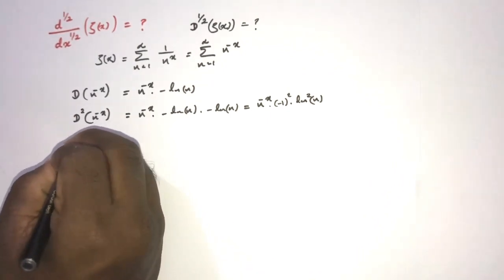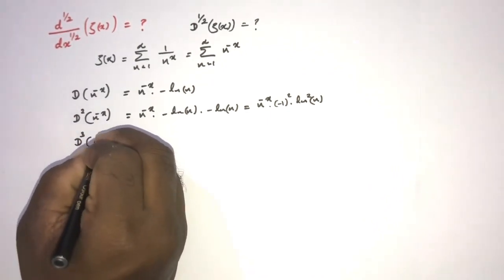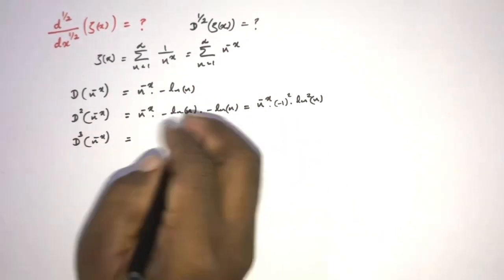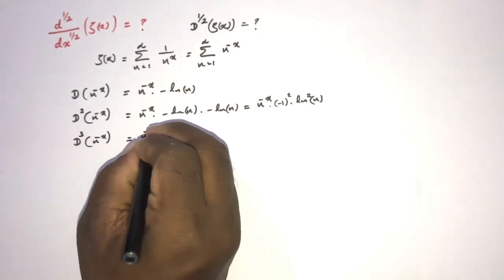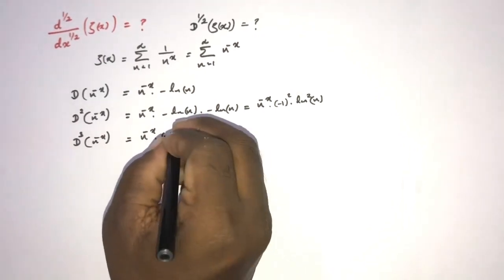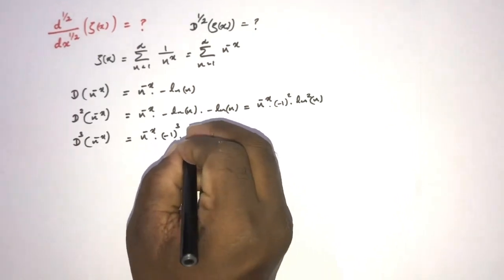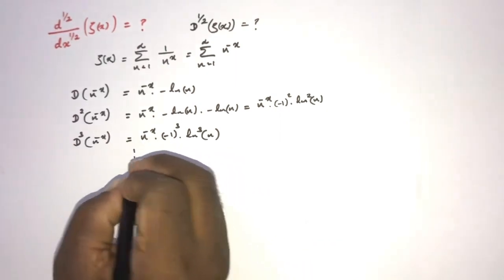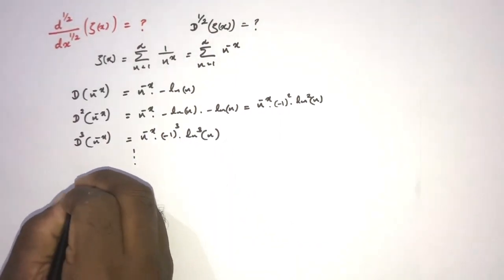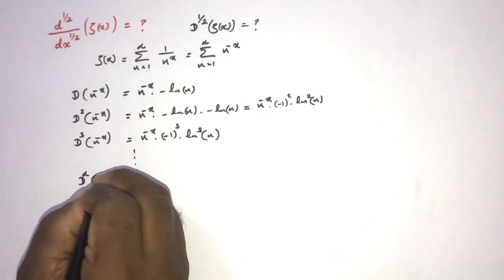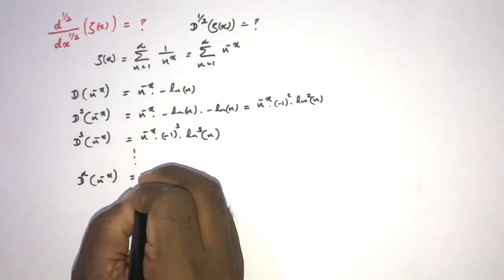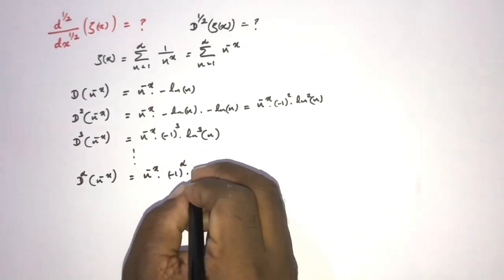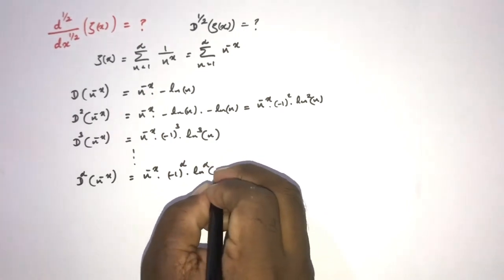If we take the third derivative, we have n to the minus x times (minus 1) cubed times natural log cubed of n. Following this pattern, the alpha-th derivative of n to the minus x equals n to the minus x times (minus 1) to the alpha times natural log of n raised to the alpha.